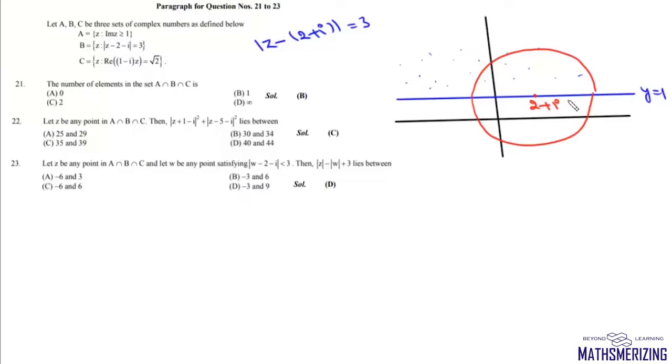And this third one is some locus which is real part of 1 minus iota z, it is equal to root 2. Now 1 minus iota into x plus iota y, its real part,